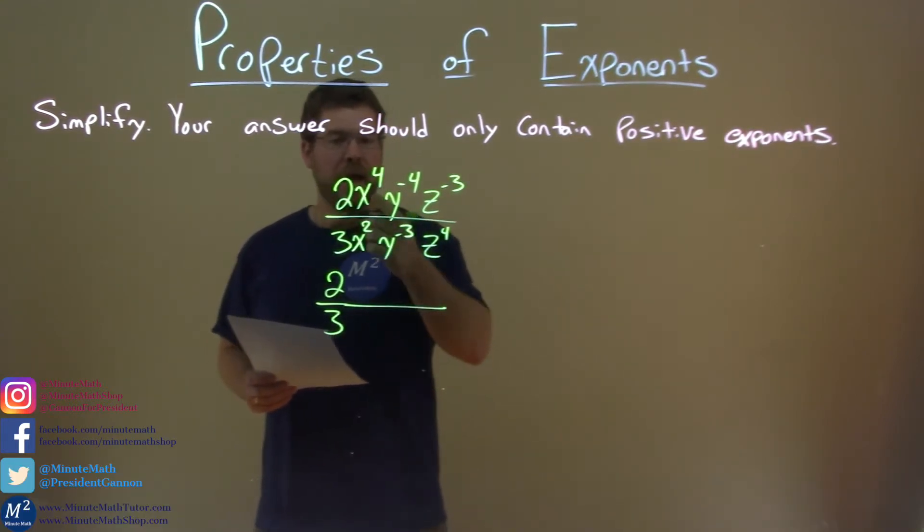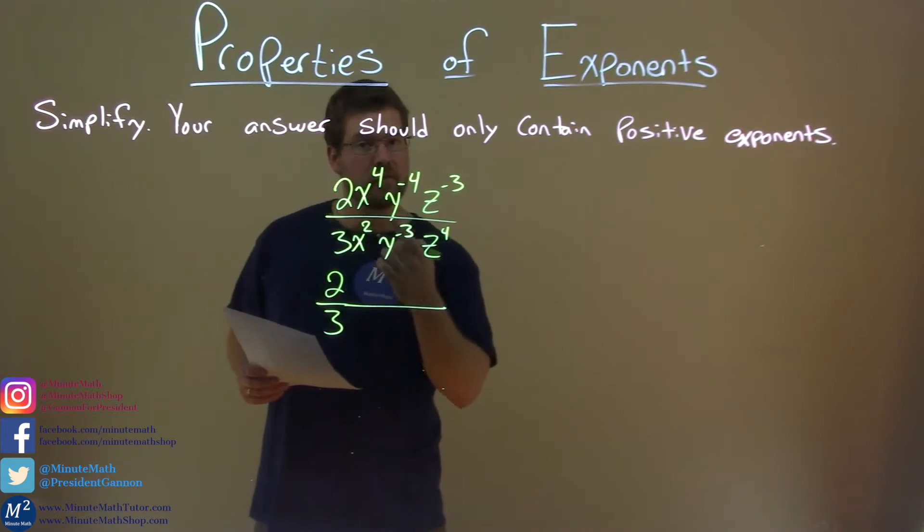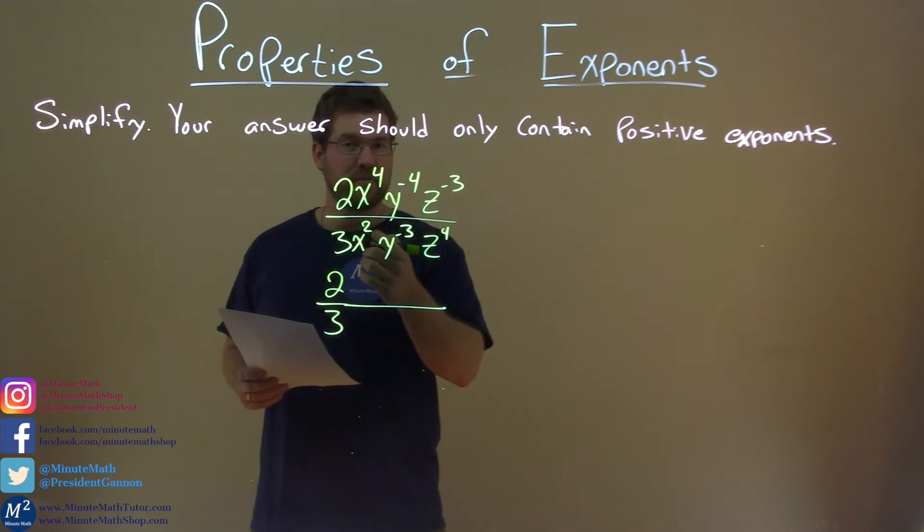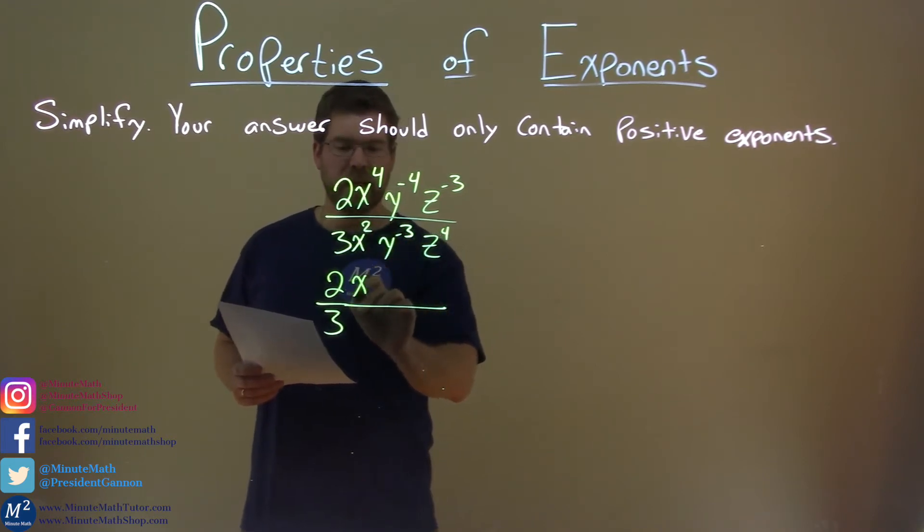Let's keep going. x to the 4th divided by x squared. Well, we subtract the exponents, 4 minus 2, which is 2, and so we have an x squared here.